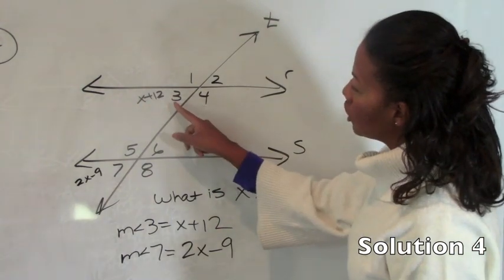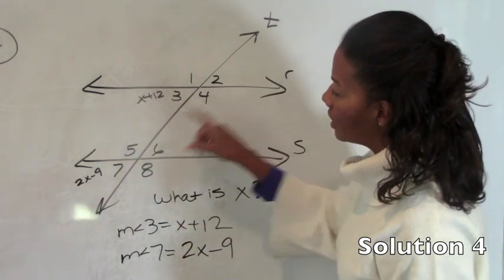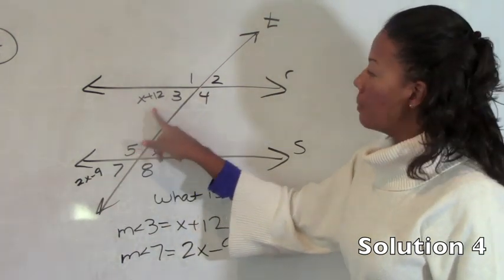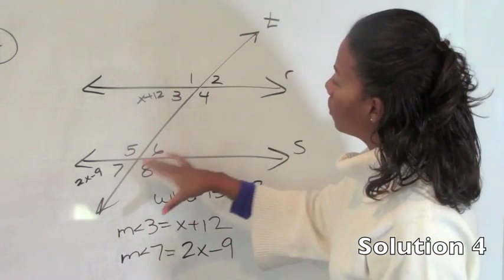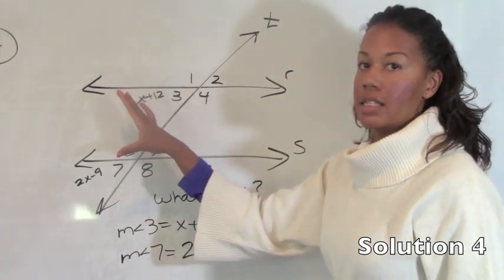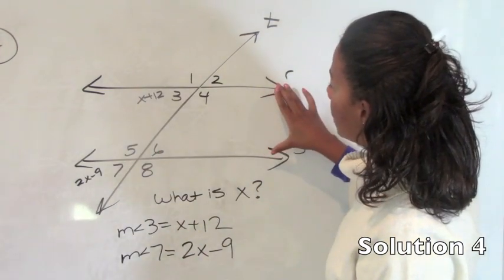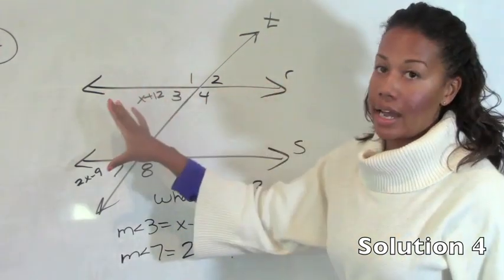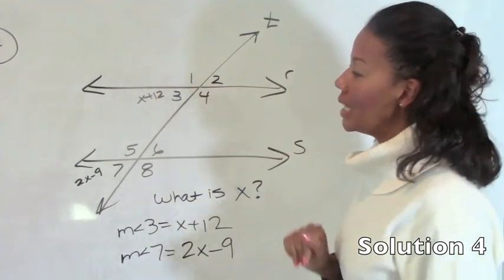You will notice that these are both acute angles and given parallel lines you would set 2x minus 9 equal to x plus 12 because they are acute angles so acute angles are always the same when a transversal cuts two parallel lines. Notice I keep saying parallel lines, given parallel lines. They did not give us that these are parallel lines. We do not know that they are parallel lines even though they appear to be, so the answer is E, cannot be determined.